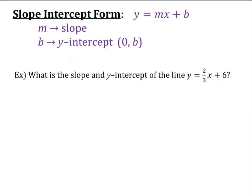Now let's talk about slope intercept form, which is y equals mx plus b, where the m stands for the slope and b stands for the y intercept. So that y intercept point would be 0 comma b.